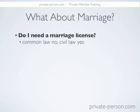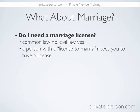So if you want a common law marriage, you don't need it. That's called a common law union. And with a civil law marriage, you do need it. And what's interesting about a marriage license is that a person with a license to perform marriages needs you to have a license. So if you actually look at the marriage laws, specifically within B.C. — check your own jurisdiction.